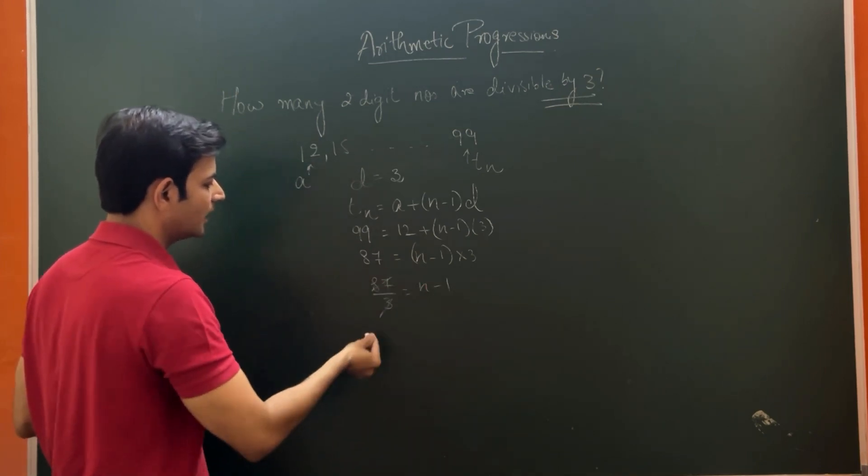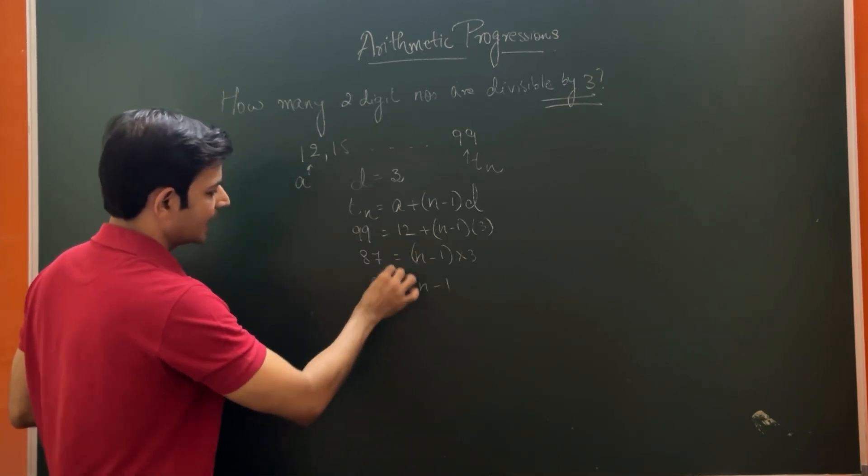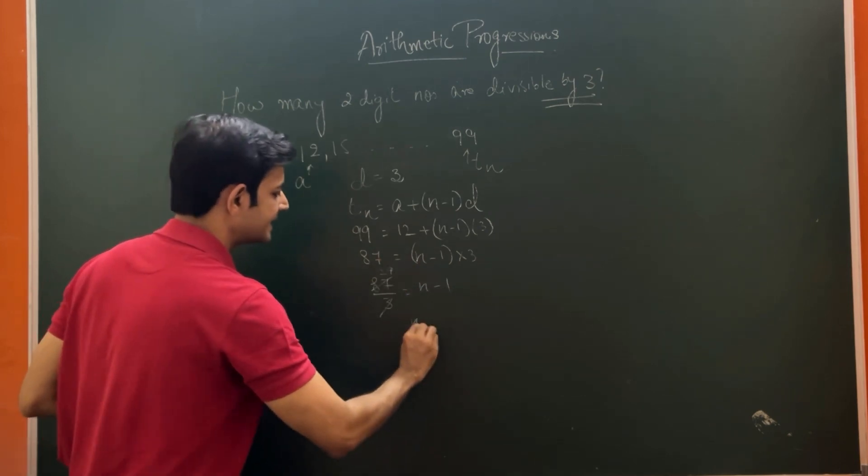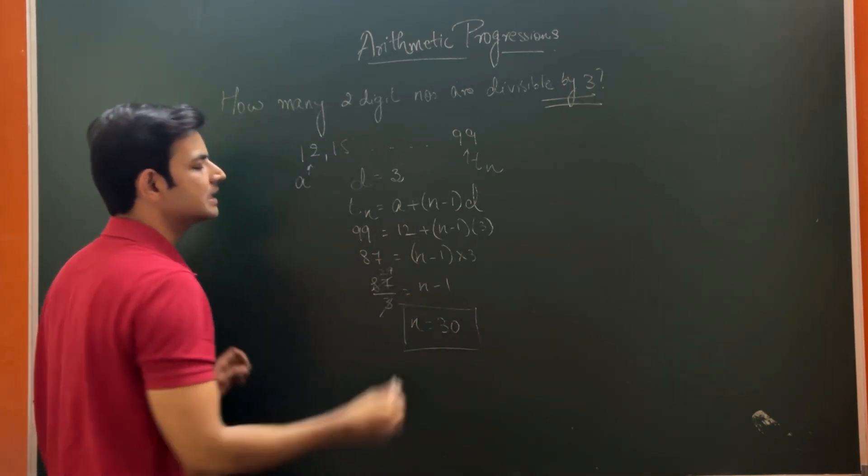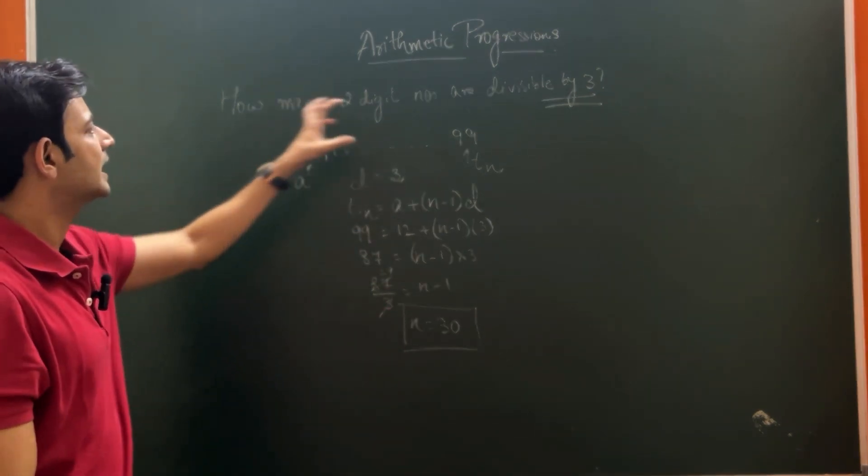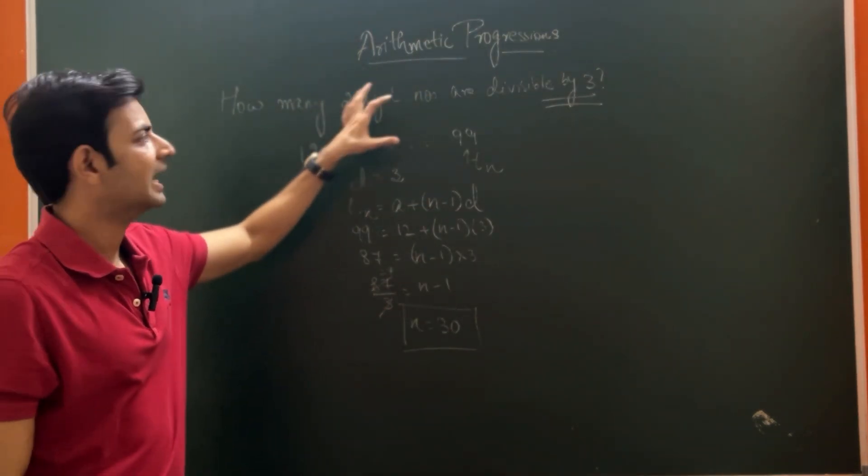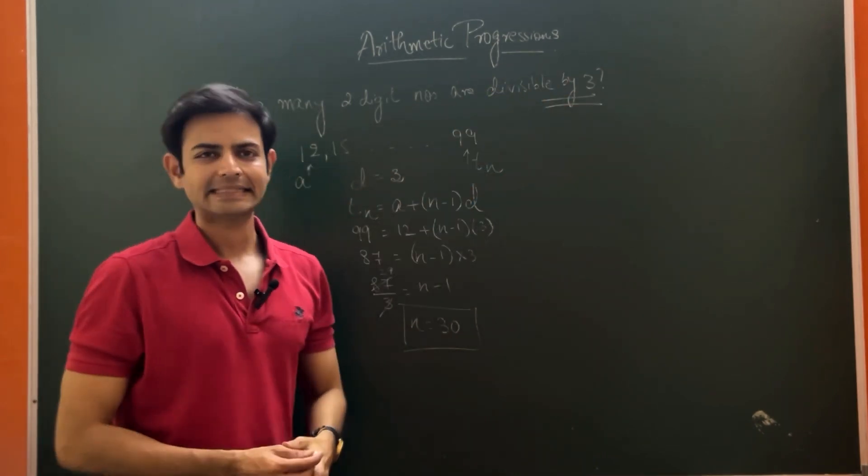We divide this by 3. If we divide it, it will become 29. So N is equal to 30. There are 30 terms which are, 30 numbers which are two-digit and which are divisible by 3.